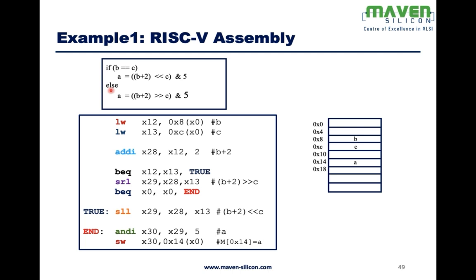Finally, it calculates the value of a through an ANDI operation. The destination register is x30, and we perform AND between x29 and the constant 5. The result is stored in x30. Whatever the result, we need to write it back into memory using store word — this register holds the value, and this is the address.